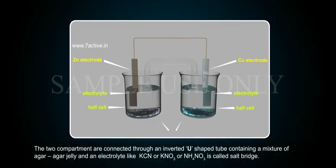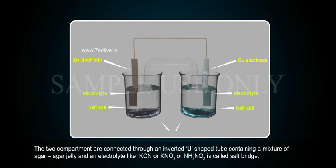The two compartments are connected through an inverted U-shaped tube containing a mixture of agar-agar jelly and an electrolyte like KCN (potassium cyanide), or KNO3 (potassium nitrate), or NH4NO3 (ammonium nitrate). It is called a salt bridge.